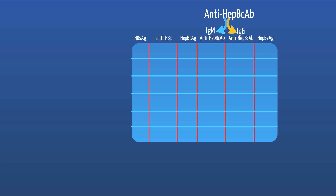Let's run through the scenarios you will commonly see and learn how to interpret the serologies together. Remember, it's important to pay attention to the positives and negatives in a serology panel. Let's start with a simple example: you get hepatitis serologies and the entire panel is negative. This likely means the patient has not had any exposure or vaccination to hepatitis B.